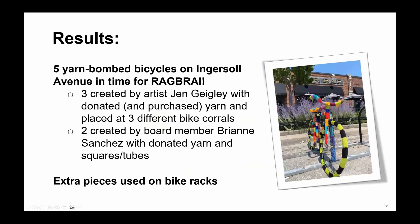We ended up with five total yarn bomb bicycles — three created by Jen and two created by Brianne — and we still had extra pieces left over which we put on the bike racks. The two bikes that Brianne made we left at Chain and Spoke on their bike rack so people could see what we did with the donated yarn. We placed Jen's three bikes one at each of three bike corrals — a project in conjunction with the Street Collective, who place three bike corrals on the street each year, taking over one parking spot each in front of popular restaurants and coffee shops on Ingersoll to give people the option to bike during warmer months. The bikes were sprinkled up and down Ingersoll.